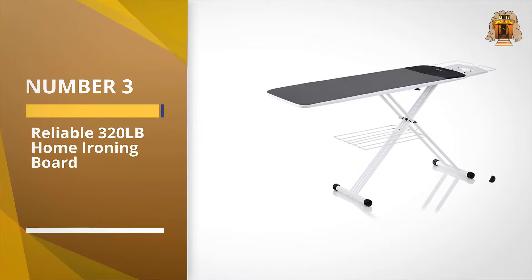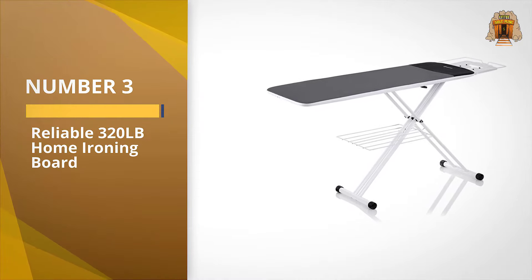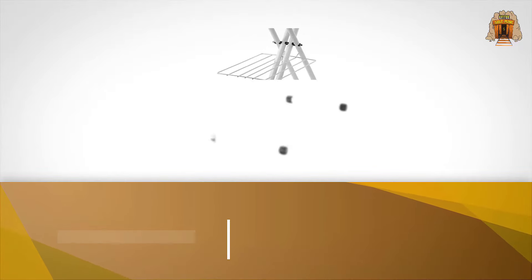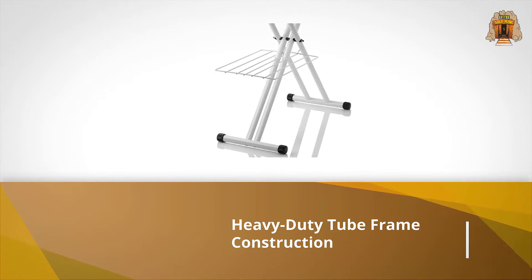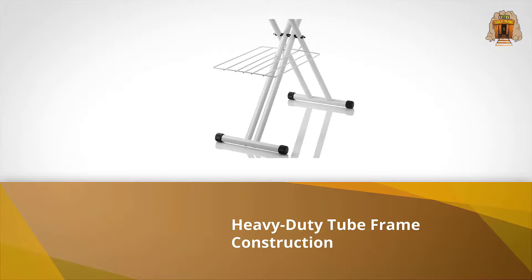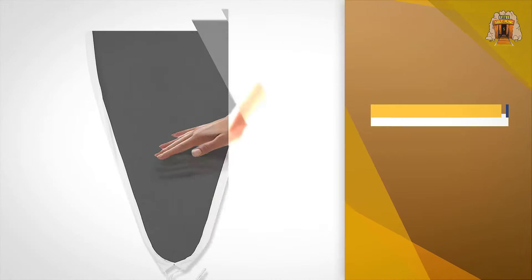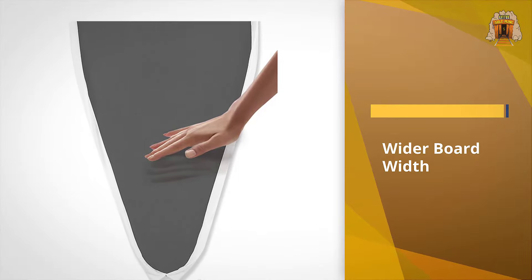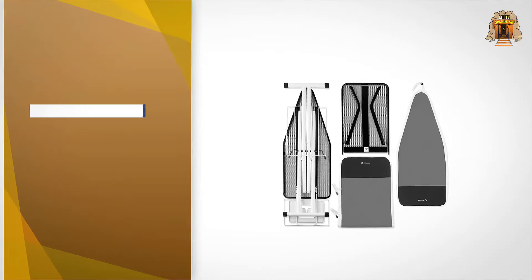Number three: Reliable 320 LB home ironing board. The Reliable 320 LB longboard not only gets our vote as one of the best ironing boards for quilting, but Amazon has also given it their seal of approval as well. This is a unique design as it has a two-in-one element not usually found in such products.